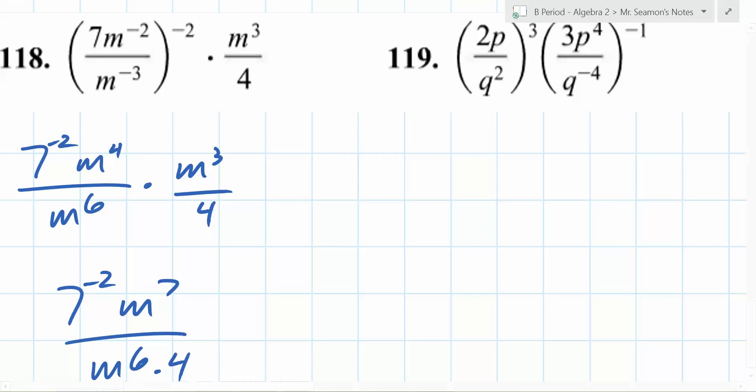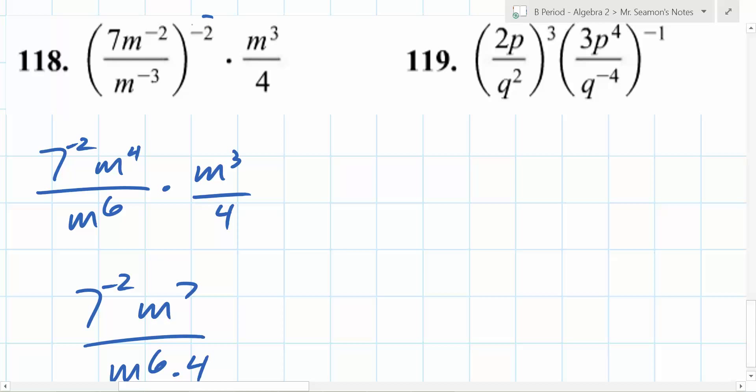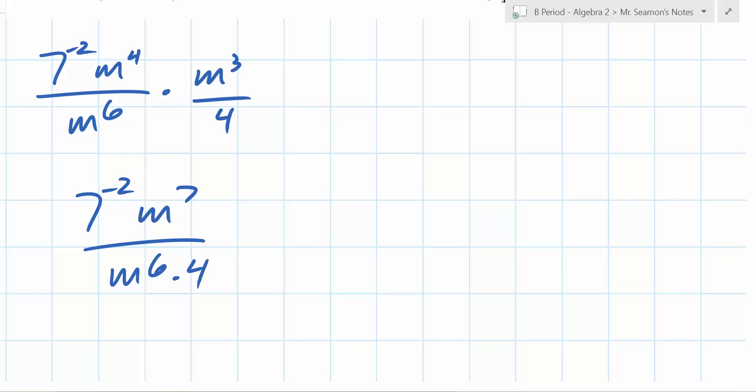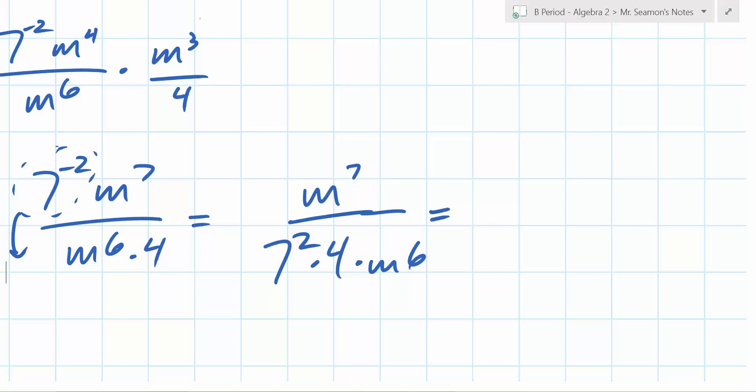m to the what? 7 over m to the 6th times 4. Wait. Why is it m to the 6th? Because it would be m to the 9th. Negative 2 times negative 3 is 6. So now, what can you do with that 7 to the negative 2? Yeah, make it 7 squared times 4 times m to the 6th. There's one last thing we can simplify. Yep. So you have m to the 7th over m to the 6th. What do you do with exponents when you're dividing? Subtract them.